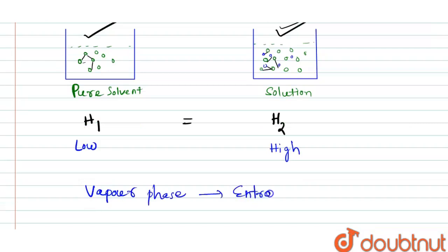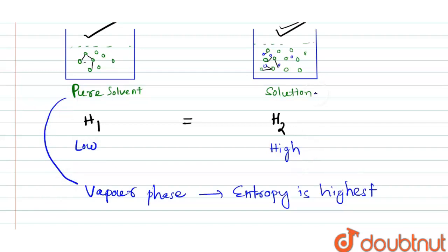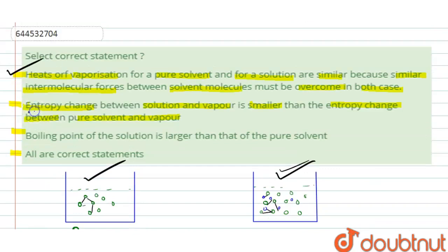Since entropy is highest in the vapor phase, the difference in entropy between pure solvent and vapor phase will be greater than the difference between solution and vapor phase. This is because the solution already has high entropy, whereas pure solvent has lower entropy. Hence the entropy change between solution and vapor is smaller than the entropy change between pure solvent and vapor. This statement is also correct.